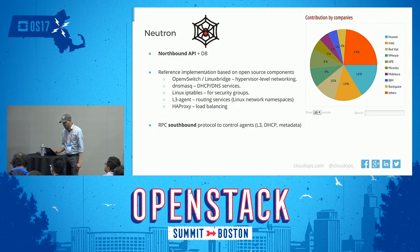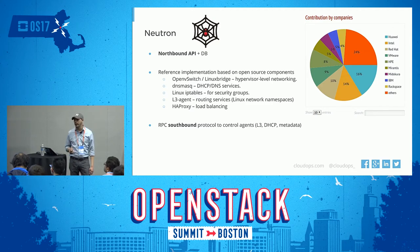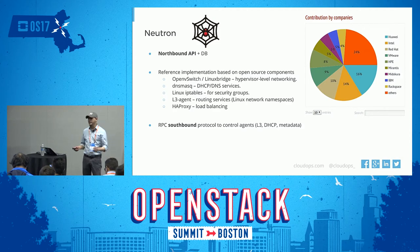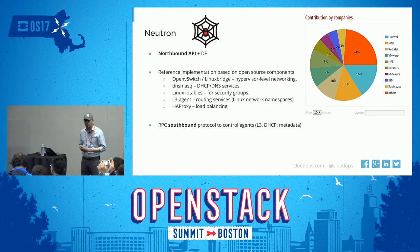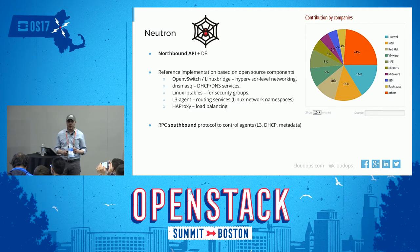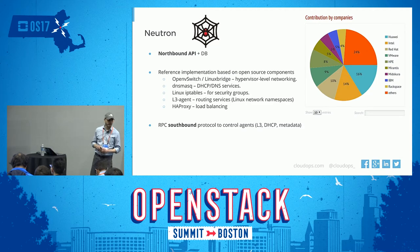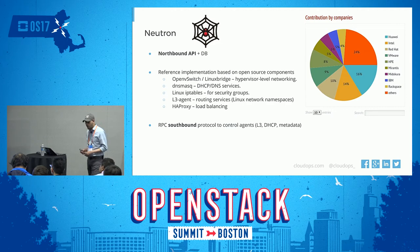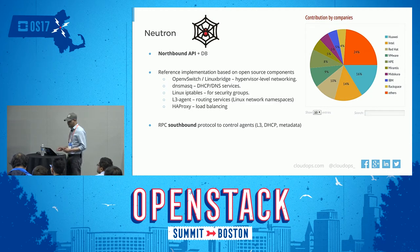So let's start talking a little bit about Neutron. Or better yet, let's start by defining what an SDN solution is. For the sake of this conversation, let's summarize it and say that an SDN solution is a software that will offer you a Northbound API. That's what Neutron is — a Northbound API plus a database.